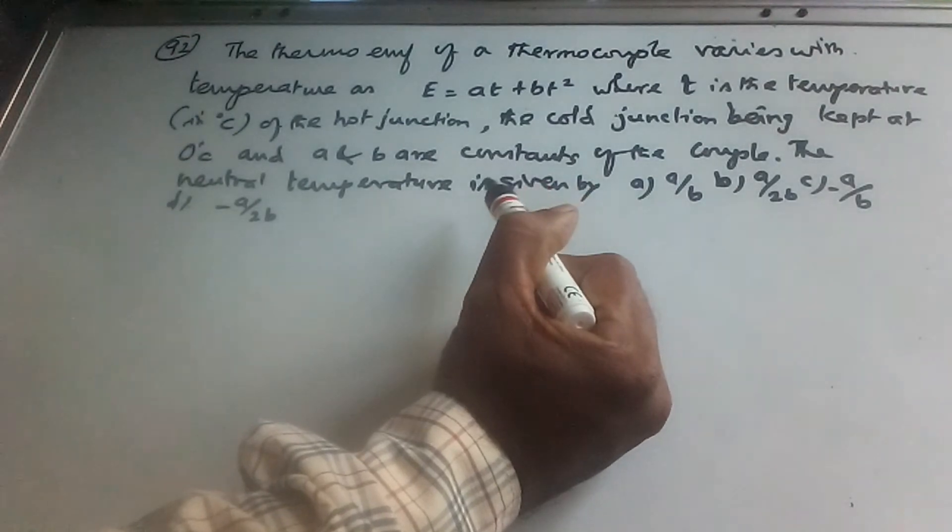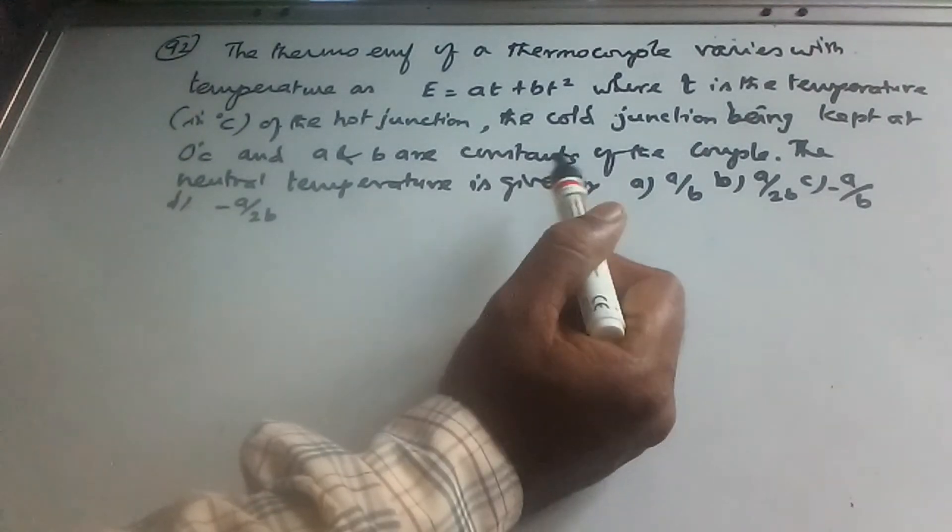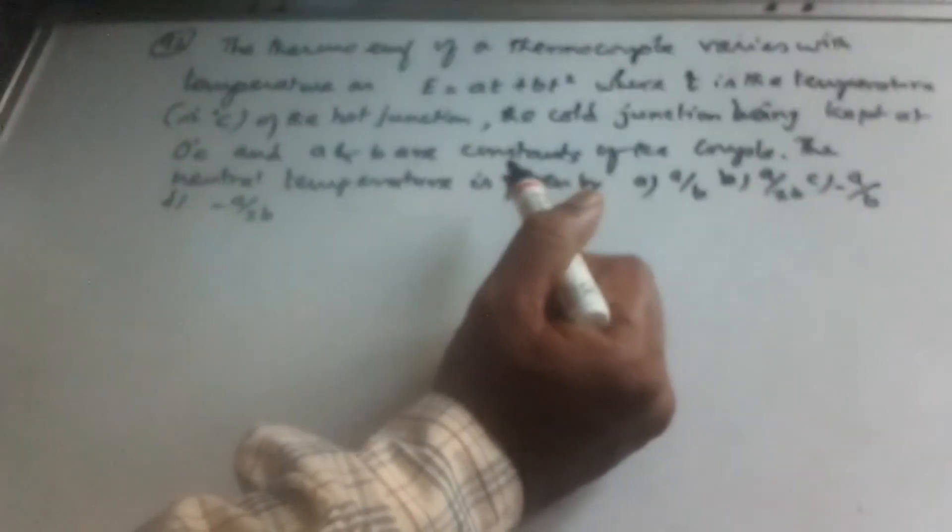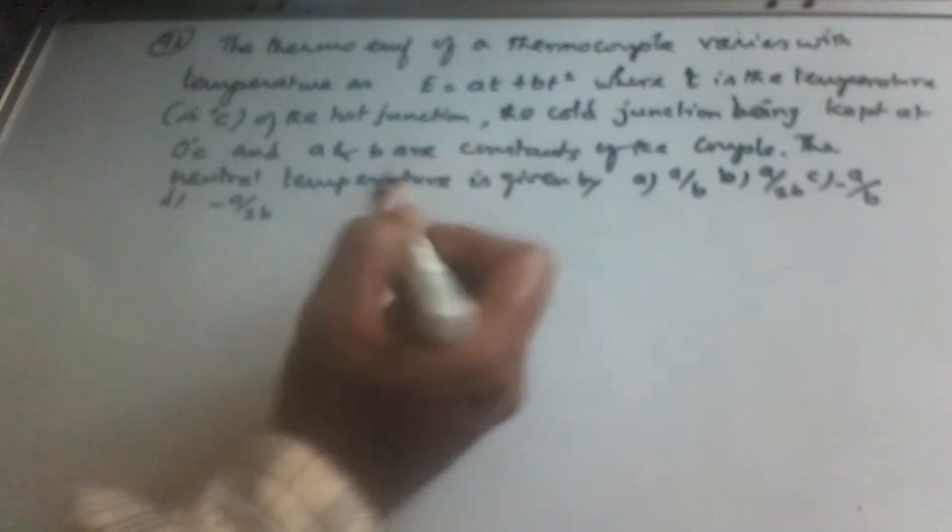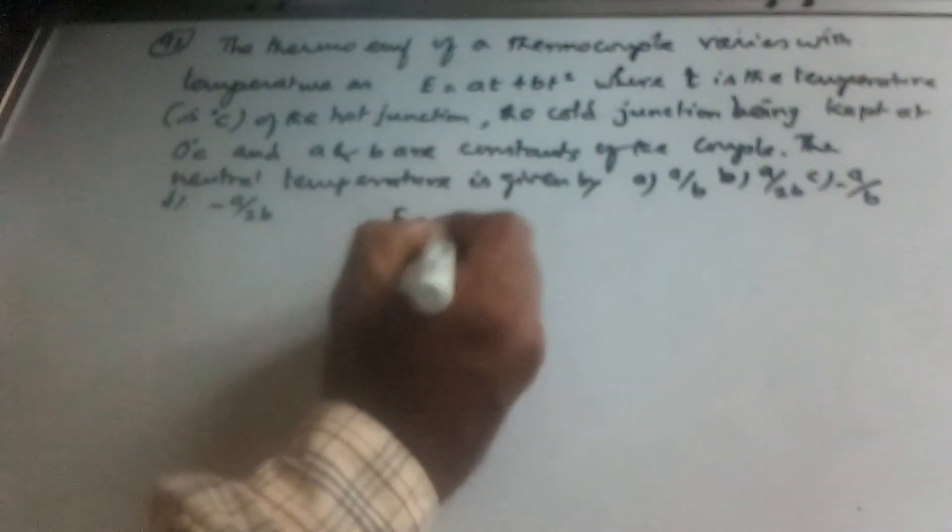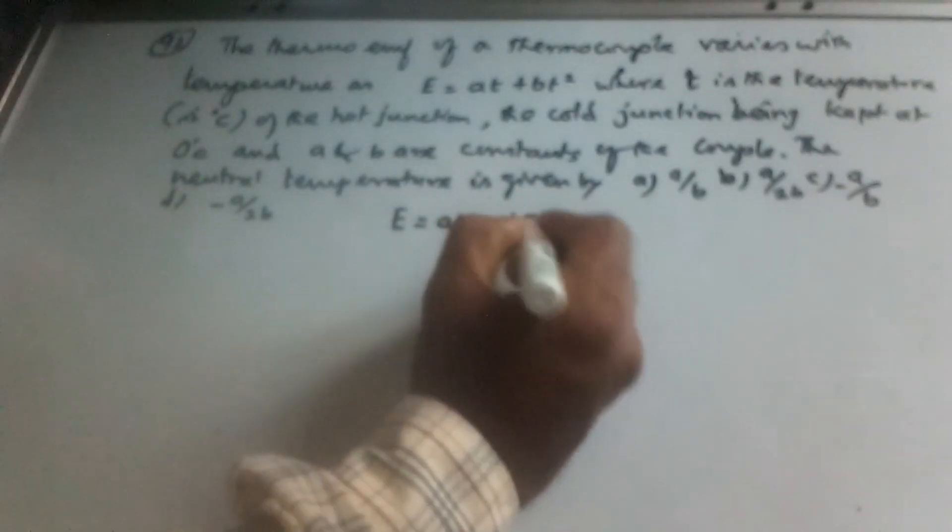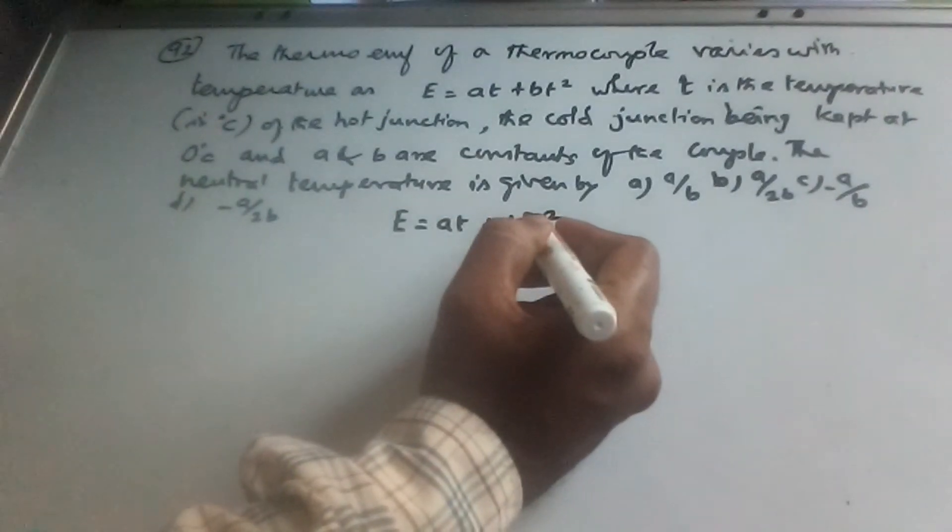Now what I have to find is neutral temperature from the four options. We have to differentiate the equation E equal to AT plus BT squared with respect to temperature.